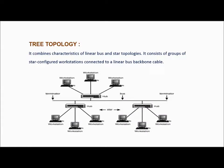Tree topology is a hybrid topology that makes use of both bus and star topology. It consists of groups of star-configured workstations connected to a linear bus cable. The main advantage is if a particular hub goes down, only the workstations connected to that hub will go down. However, if the backbone bus goes down, the entire network falls down.